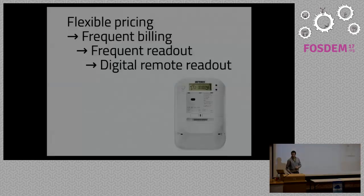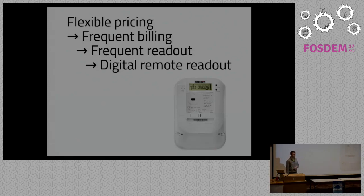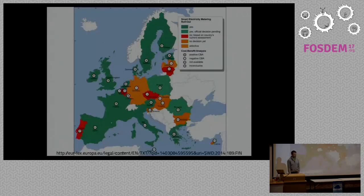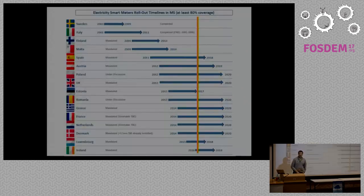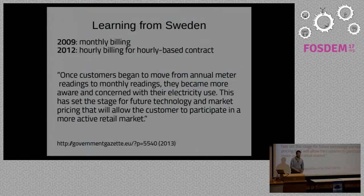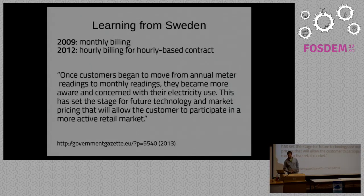What does that mean for me as a consumer? I want to participate in the market. I need flexible pricing and therefore frequent billing because prices fluctuate — and thus a frequent readout, which means a digital remote readout, which is the smart meter. In Europe, most countries are doing that. One of the first was Sweden, where they introduced monthly billing instead of yearly, and now even offer hourly billing, giving consumers a much more frequent market to participate in.